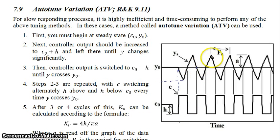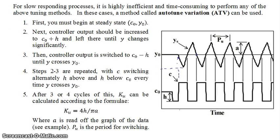In doing this, you'll cause the controlled variable to oscillate up and down because you've made your controller signal go up and down like this over and over again. You repeat these steps with C switching alternately H above and then H below C_0, every time your controlled variable Y crosses your original steady state Y_0. After you observe three to four cycles of this, the oscillations will start to settle down to be repeatable, and then you can get your K_U, which is calculated according to this formula here, your ultimate controller gain. You can read the value of A off of the graph of the data.